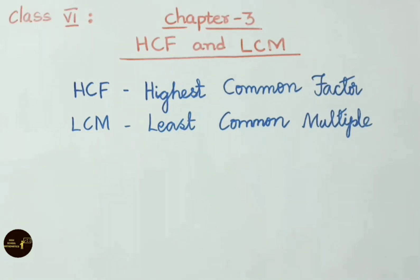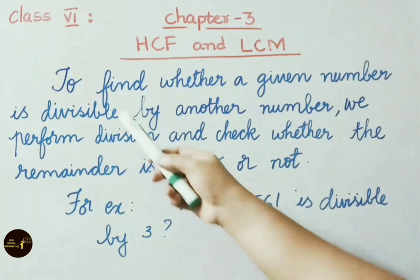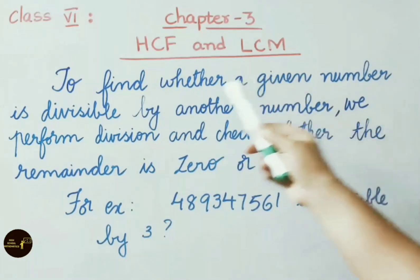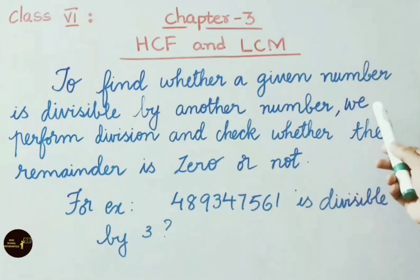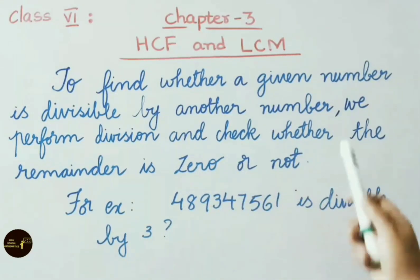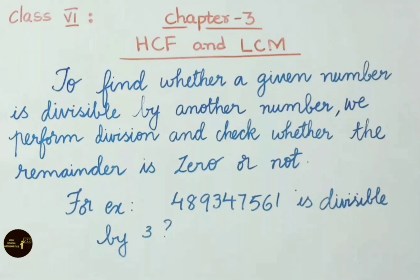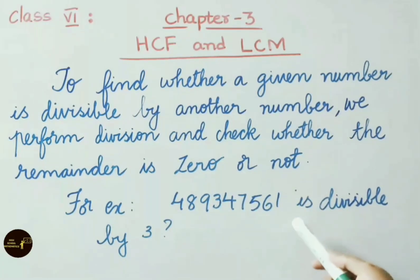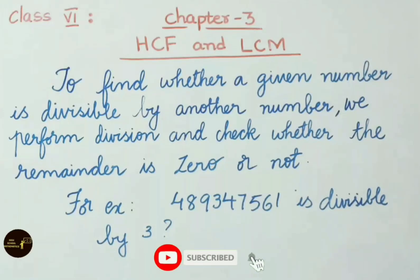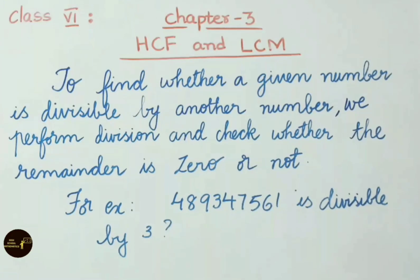Today we shall see what is a divisibility rule and divisibility rules for 2, 3 and 6. To find whether a given number is divisible by another number, we perform division and check whether the remainder is 0 or not. In some cases it is very difficult. For example, is 4,893,475,61 divisible by 3? We can answer this type of question by using divisibility rules without performing the actual division.